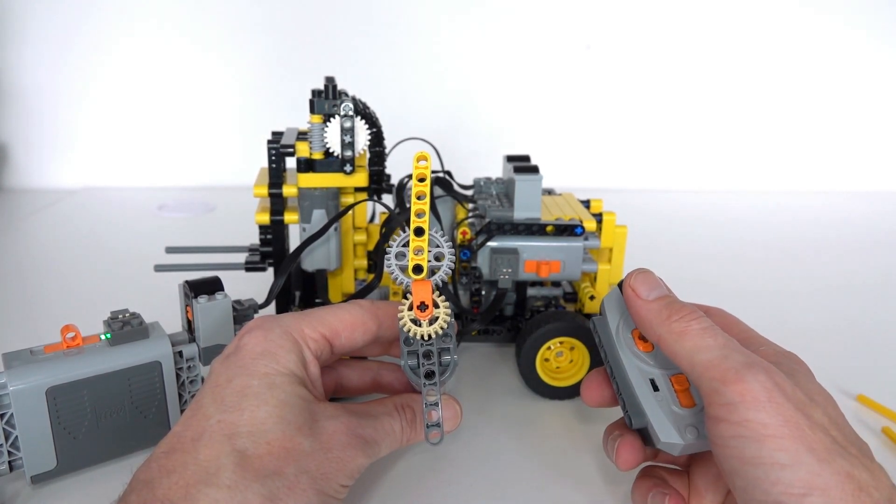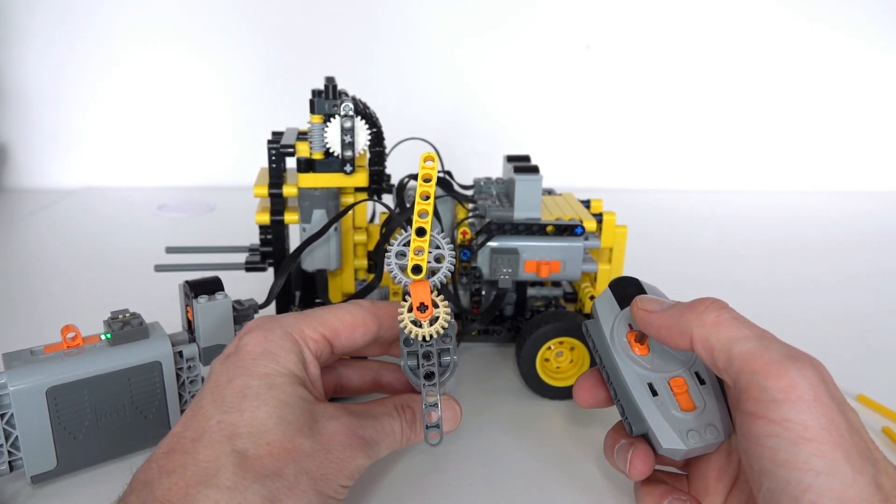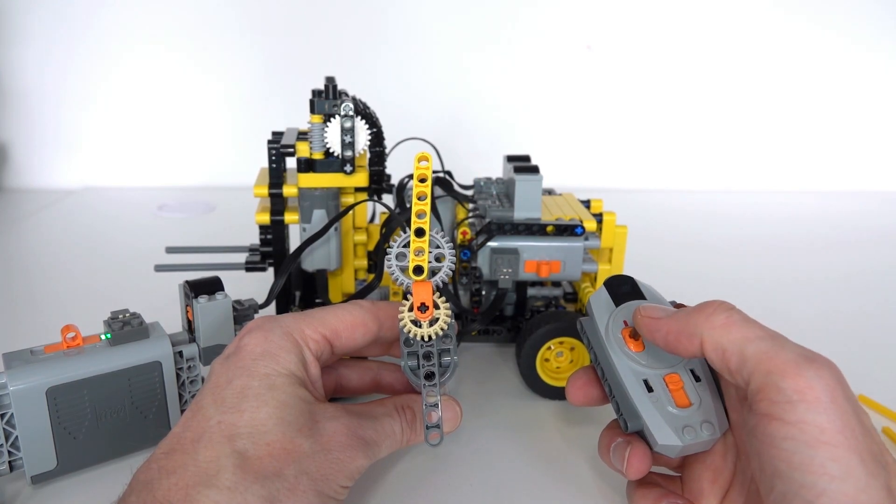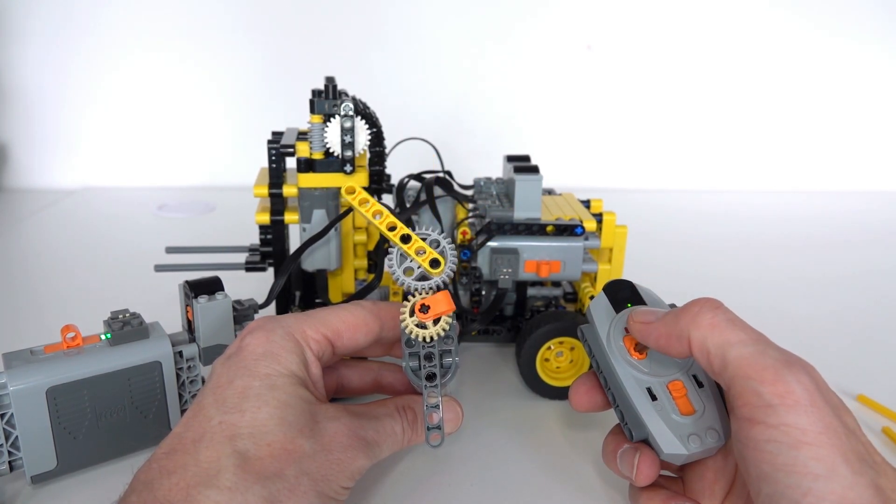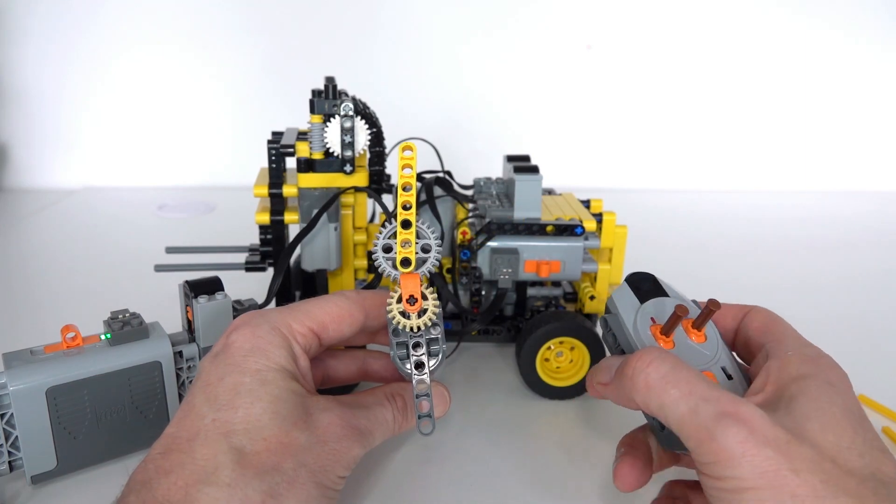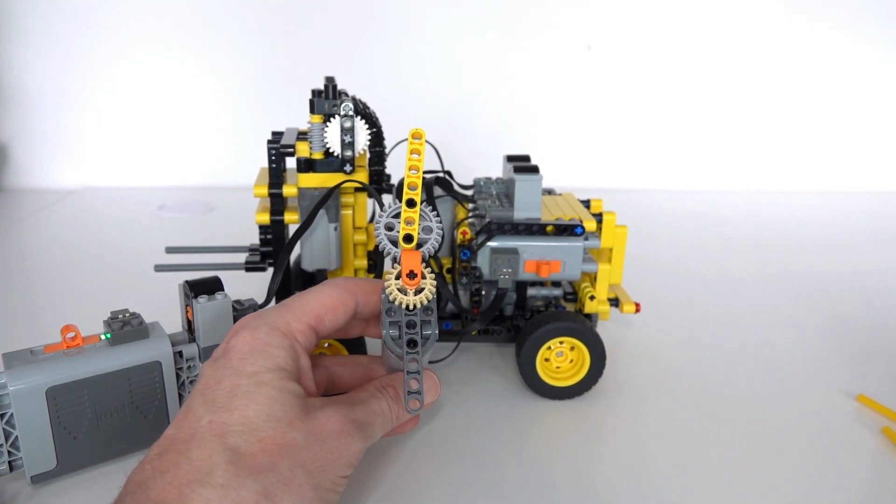If I rotate another direction it will do it in reverse and forward. So like you can see there it always returns back to the center, which is ideal for steering. So that's how the steering has been implemented on this particular forklift.